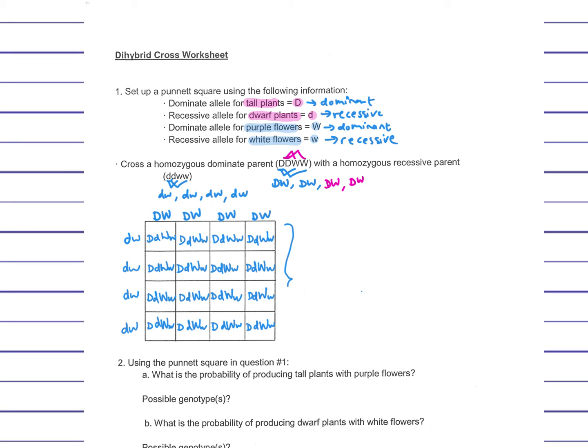So if they've all got a big D and they've all got a big W, if we go look at our key again, you will see that the big D makes all of the plants tall. It's got the dominant trait, and this big W makes all of the plants have purple flowers.